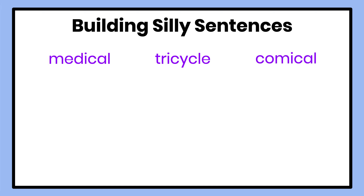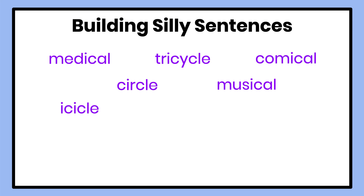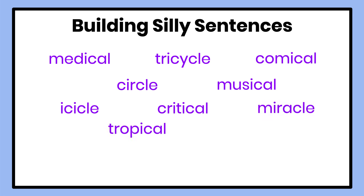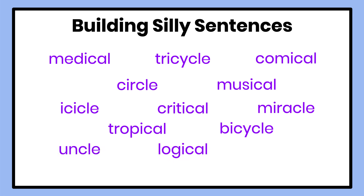Comical. Circle. Musical. Icicle. Critical. Miracle. Tropical. Bicycle. Uncle. Logical. And practical. Great job — those are a whole bunch of words ending in our CL sound spelled with either CAL or CLE. I'm so glad that you took the time to practice saying and spelling these words at home as well.